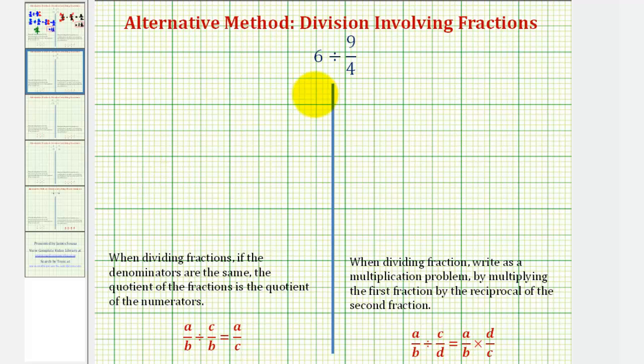So to start the alternative approach, we're going to write 6 as 6 over 1 divided by 9 fourths. And now we'll obtain a common denominator, which would be 4. So we'll multiply 6 over 1 by 4 over 4.